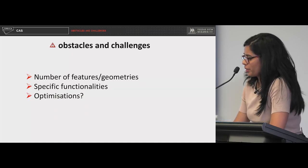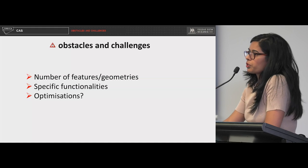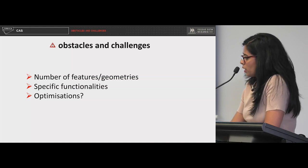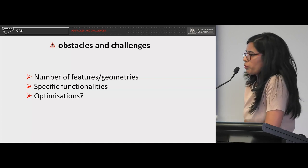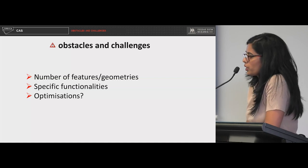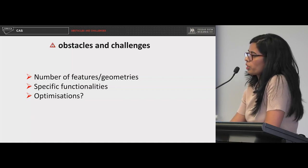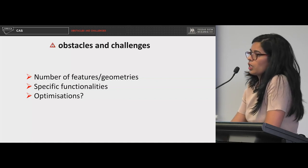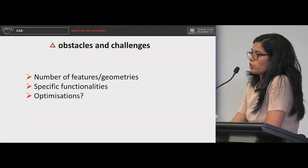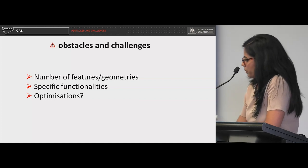One of the initial obstacles and challenges was the number of features — 1.5 million — and we had to make sure we could render those 1.5 million geometries on the browser quickly without making users wait. We used web sockets to stream the data onto the network, displaying chunks of data as we received them. So if a query returns 100,000 records, it won't wait for all of them to load — it fetches every 20,000 records and keeps streaming to the browser.